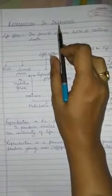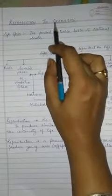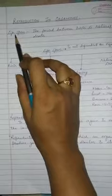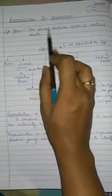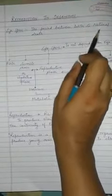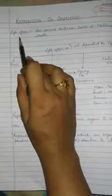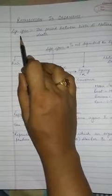Organisms are living beings which have a particular lifespan. Now what is lifespan? Lifespan is the period between birth to natural death. The period between birth to natural death is called the lifespan of the particular organism.